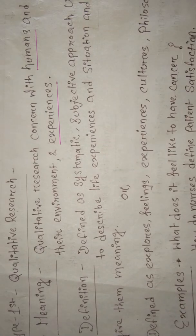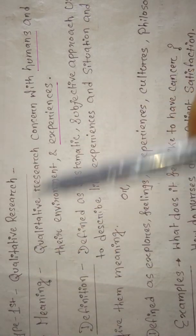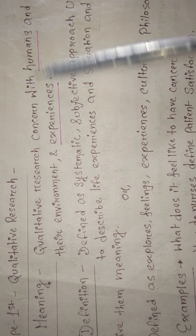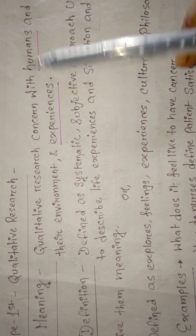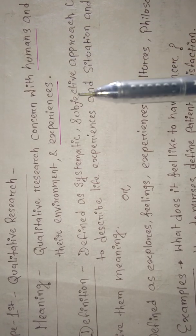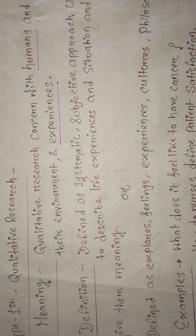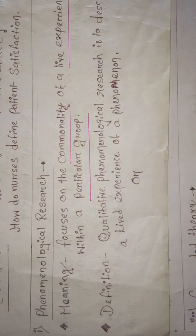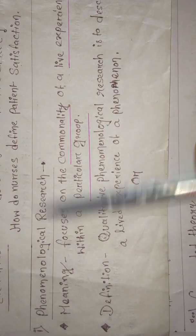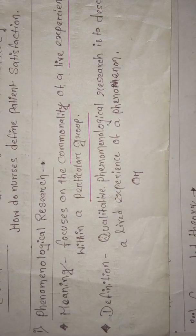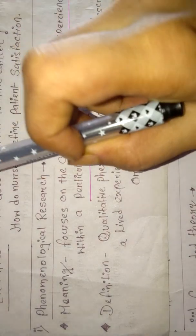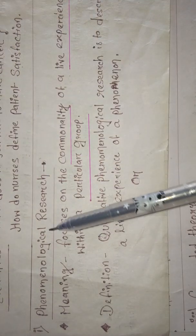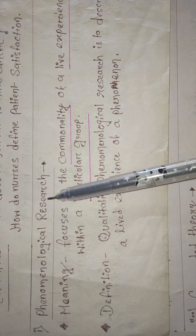Basically, you have to remember that qualitative research is about human experiences - mainly about experiences, cultures, taking their interviews. Now let's see the first type of qualitative research, which is phenomenological research.